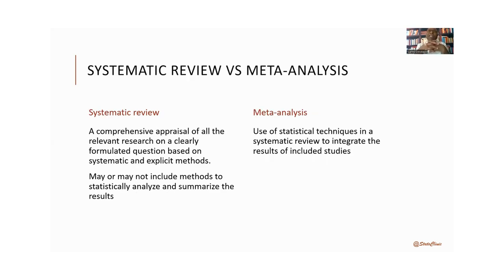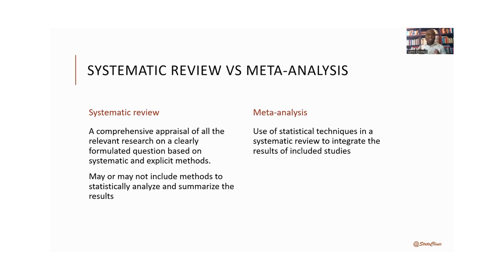That's the problem that a systematic review endeavors to solve, by having a clear set of procedures that are articulated. You follow those procedures, identify studies, and synthesize those studies to reach conclusions about what the body of work relevant to this question actually says. A systematic review is a comprehensive appraisal of all the relevant research — the full body of work — of a clearly formulated question. For example: is there a relationship between multivitamins and neonatal mortality?